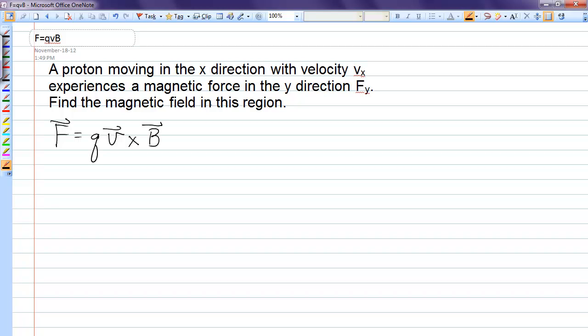In this case, we need to use the i-hat, j-hat, k-hat convention to work out this cross product. If the proton is moving in the x direction with velocity Vx, I can write the velocity vector as Vx i-hat. If the force is in the y direction, I can write the force vector as Fy j-hat.